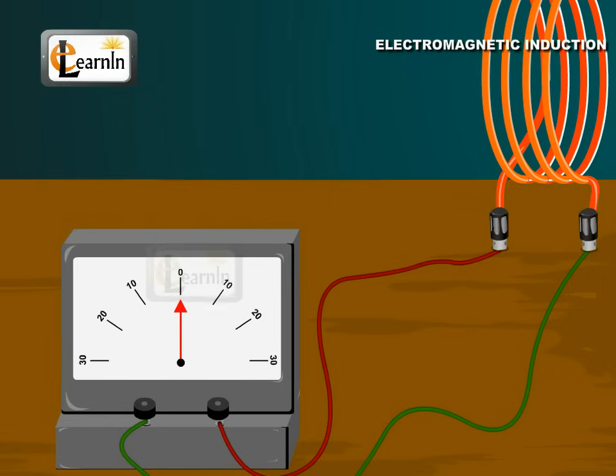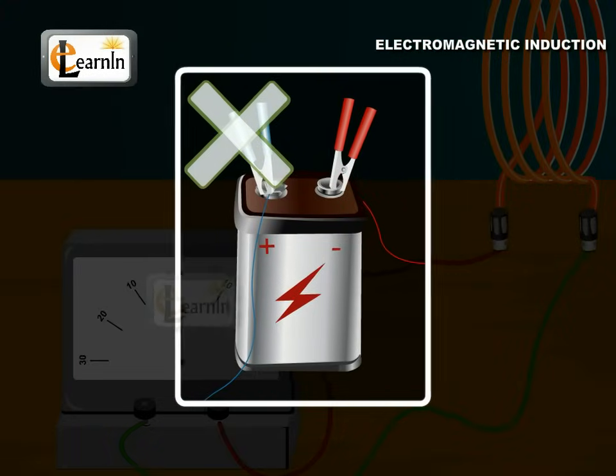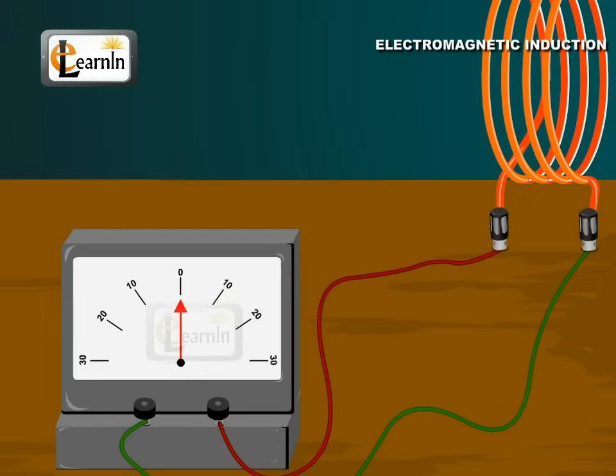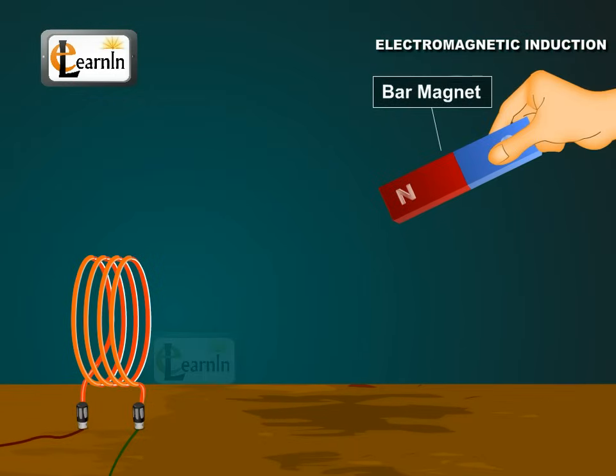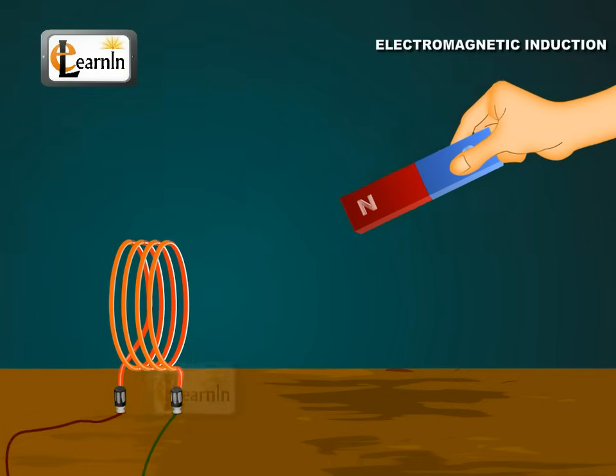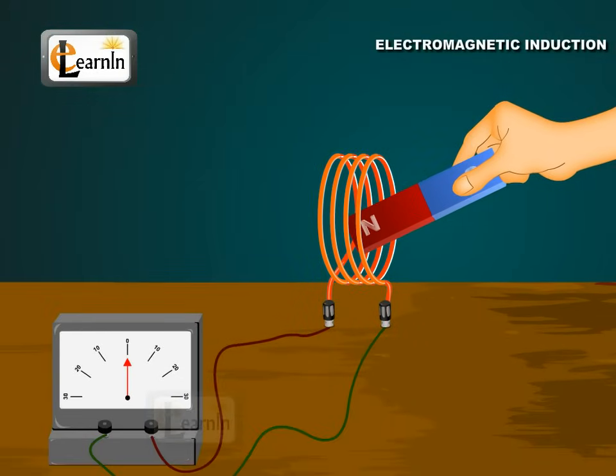Note that this circuit contains no source of electricity and the galvanometer shows zero reading initially. Take a bar magnet and move it swiftly towards the coil with its north pole facing the coil.